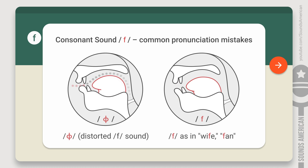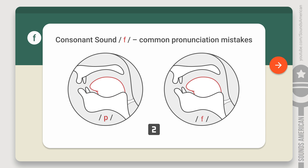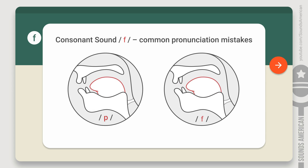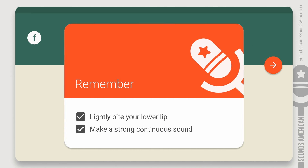Compare: Wife, Fan. Some people involuntarily stop the air when making the F sound. This is good for making stop sounds, but the F is not one of them. The F is a continuous sound, so you should be able to stretch it out. Compare: Pan, Fan. See how this changes the meanings of the words? Make sure to lightly bite your lower lip with your teeth and release a stream of air between them, producing a strong, continuous sound.